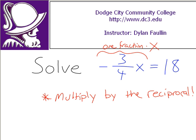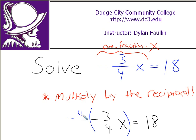Let's take this equation, negative 3 over 4x equals 18, and multiply by the reciprocal of negative 3 over 4. The reciprocal of negative 3 over 4 is negative 4 over 3. So on the left hand side, I'm going to multiply negative 3 over 4x by negative 4 over 3. The 4's are going to cancel out, the 3's are going to cancel out, and negative times a negative will be positive — so the whole fraction just completely goes away, and we end up with just x by itself, which is exactly what we're trying to do.